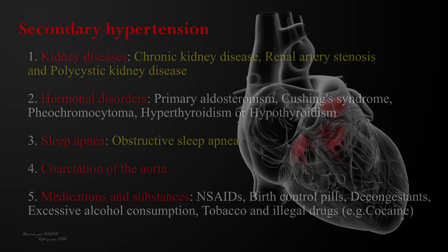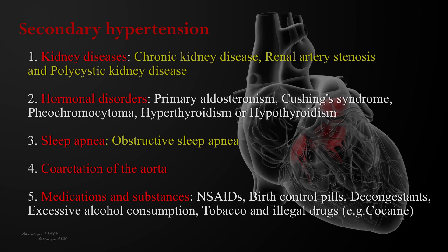Secondary hypertension, unlike primary hypertension, is caused by an underlying medical condition or a specific factor such as kidney diseases, hormonal disorders, sleep apnea, coarctation of the aorta, medications, and substances.